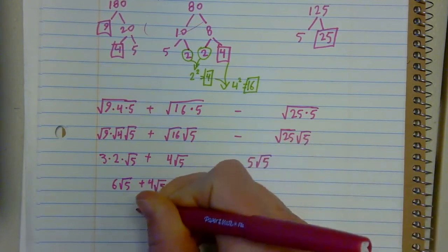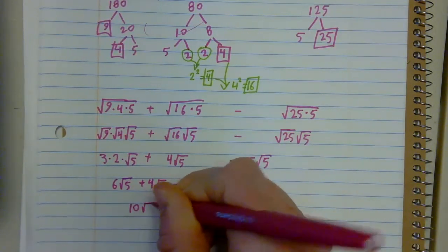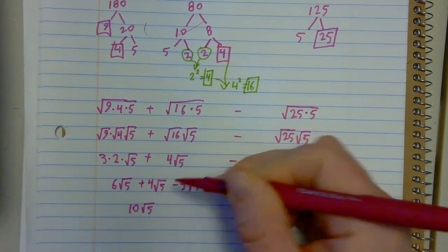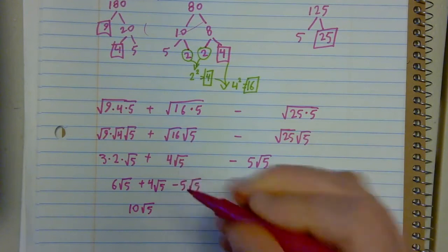So 6 plus 4, that would be 10 root 5's. Because I have 6 root 5's here. I have 4 more root 5's here. 6 plus 4 would be 10.